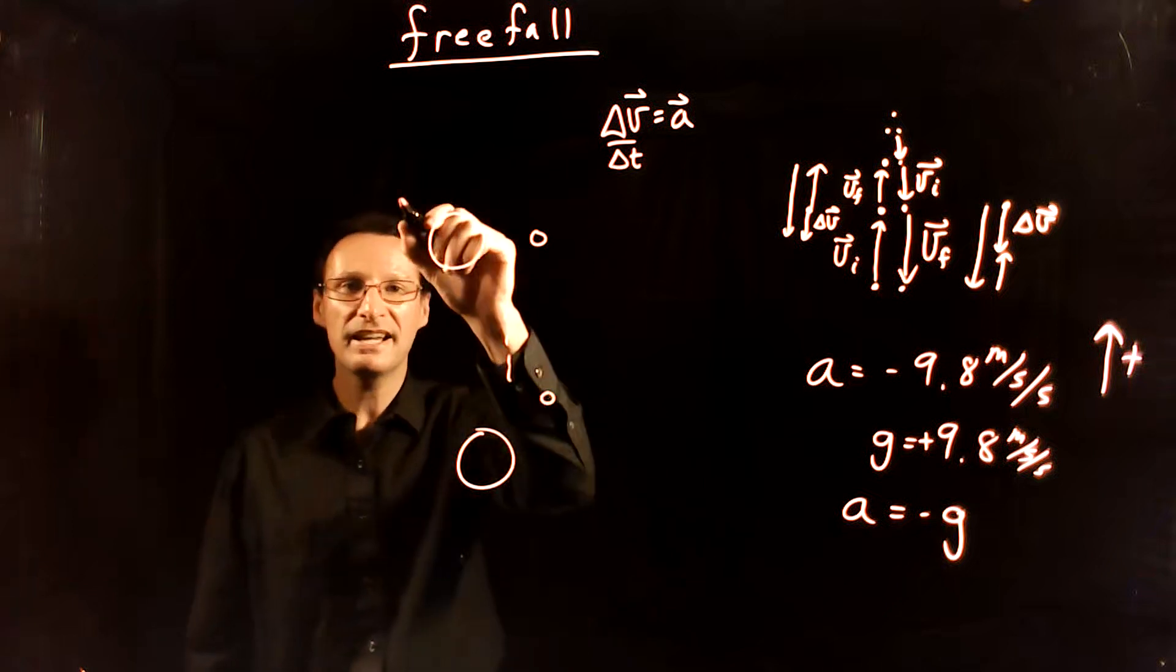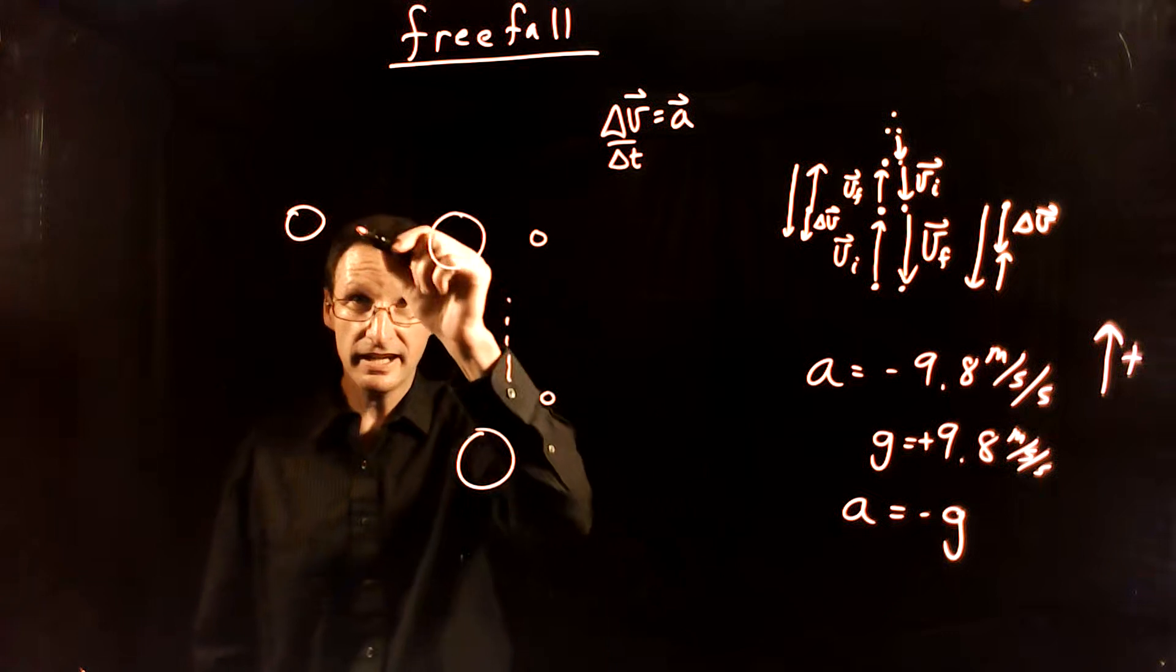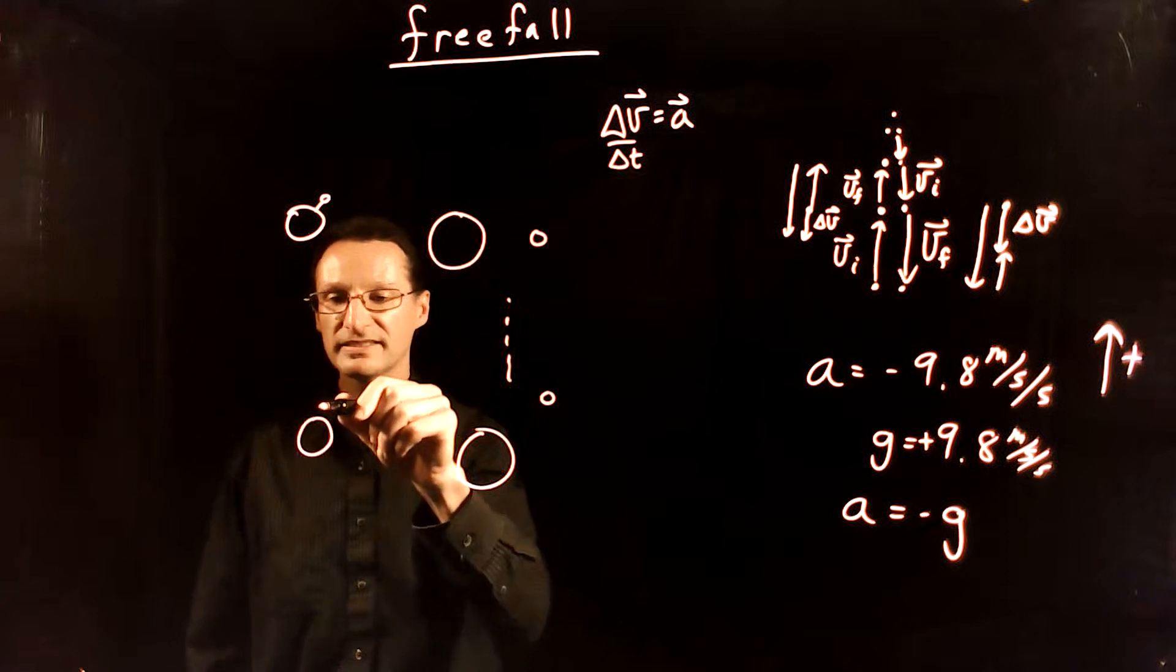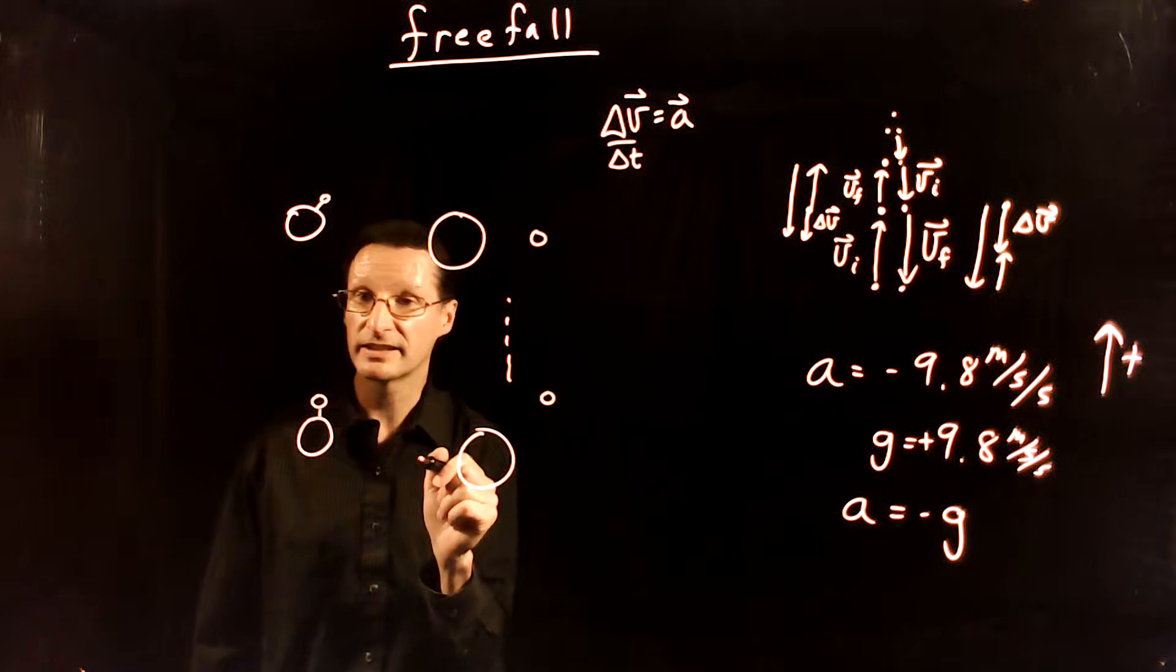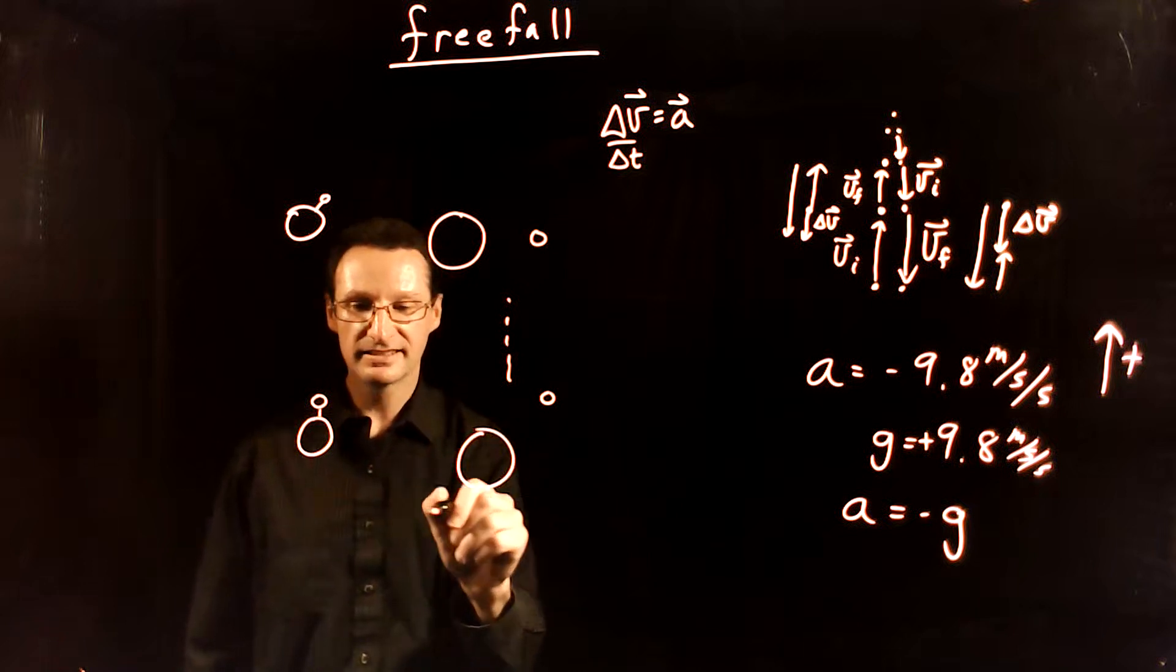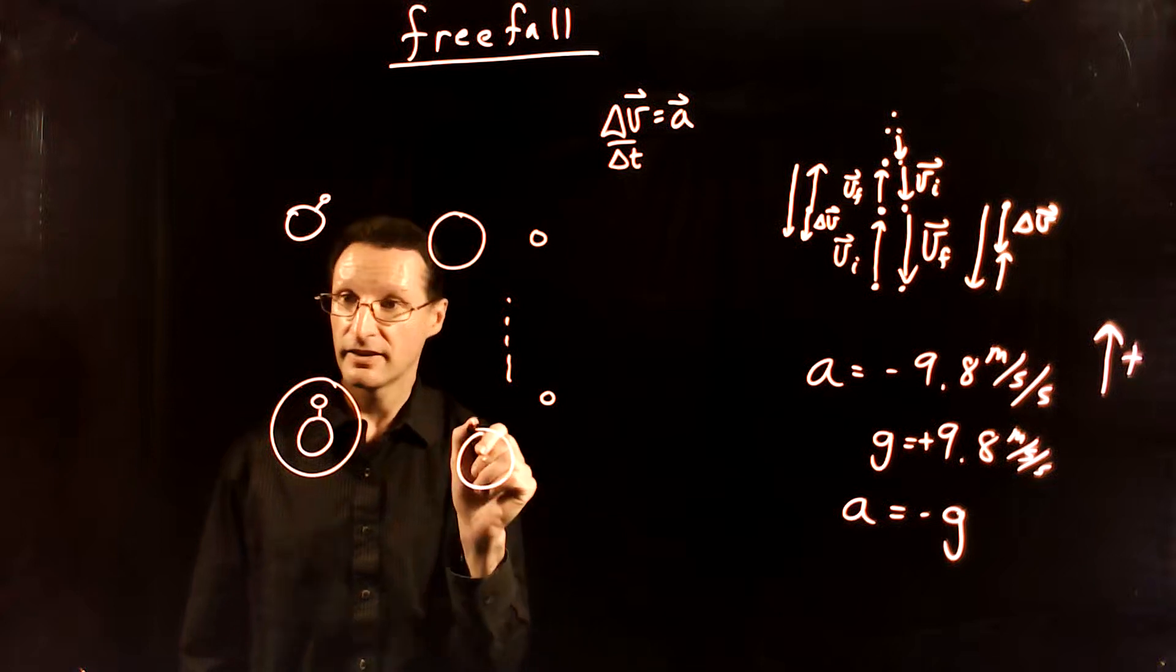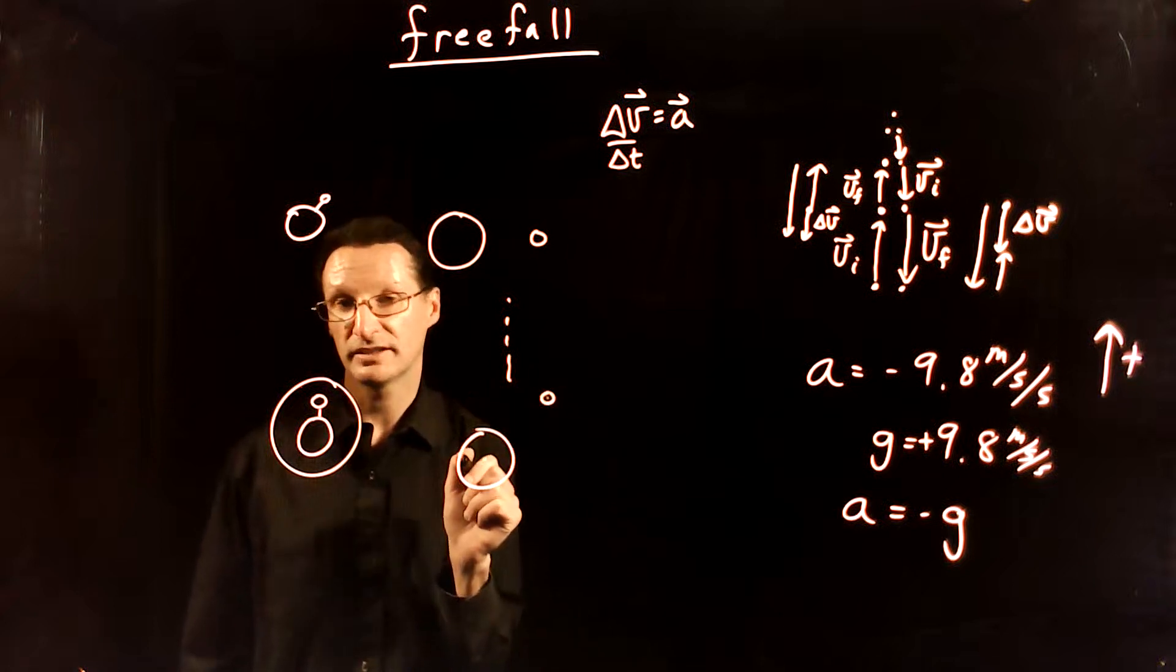So now here's part of the experiment. Imagine that we tie these together with a little string, and then we let them fall. Well, as it falls, the more massive one, if our assumption is correct, is going to want to fall more quickly. The less massive one is going to drag, and the acceleration of this whole thing will be less than the acceleration of the large object, but bigger than the acceleration of the small object.